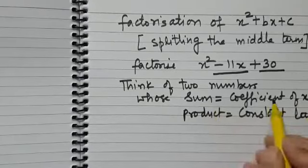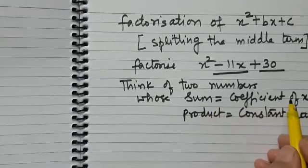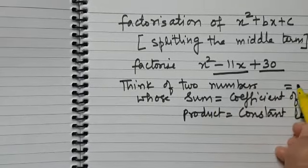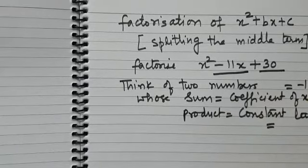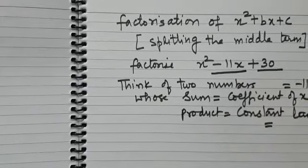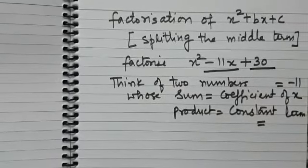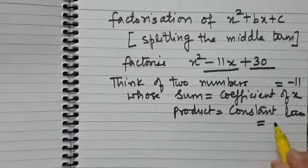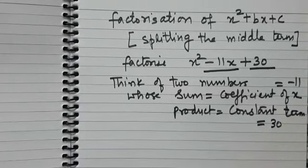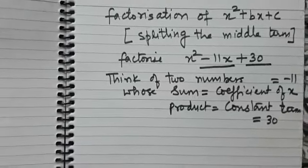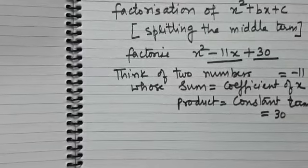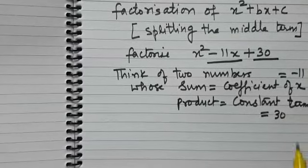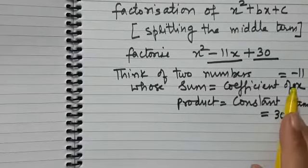So what is the coefficient of x? The coefficient of x is minus 11. And what is the constant term? The constant term is 30. So think of two numbers whose sum is minus 11 and whose product is 30.